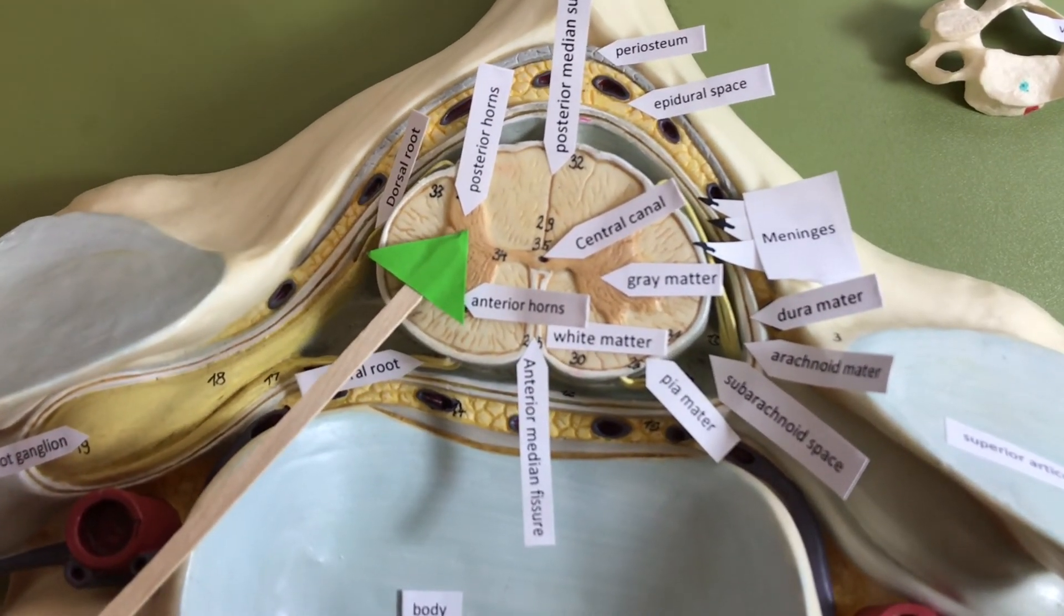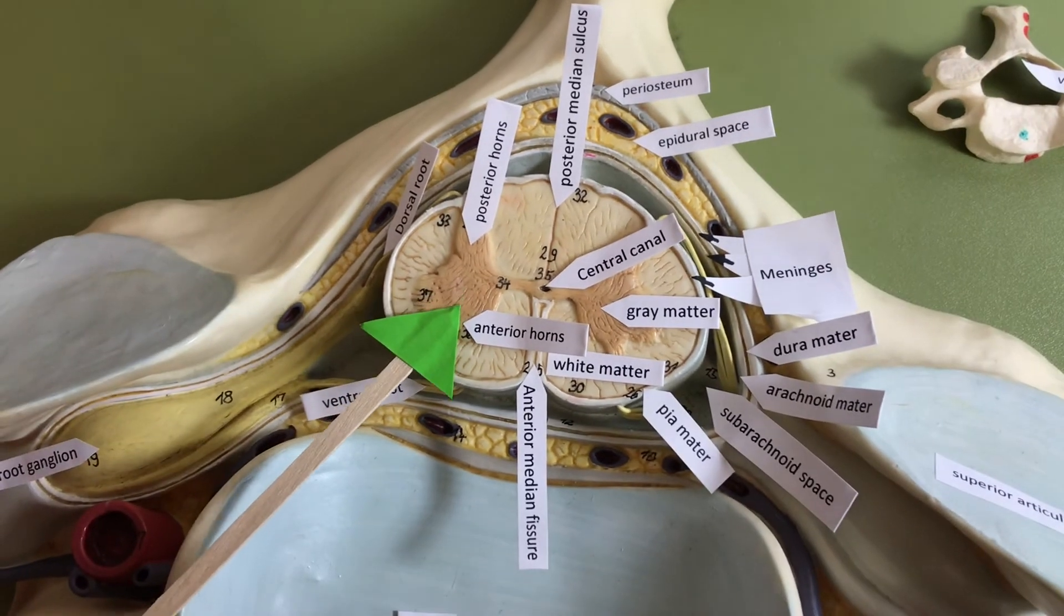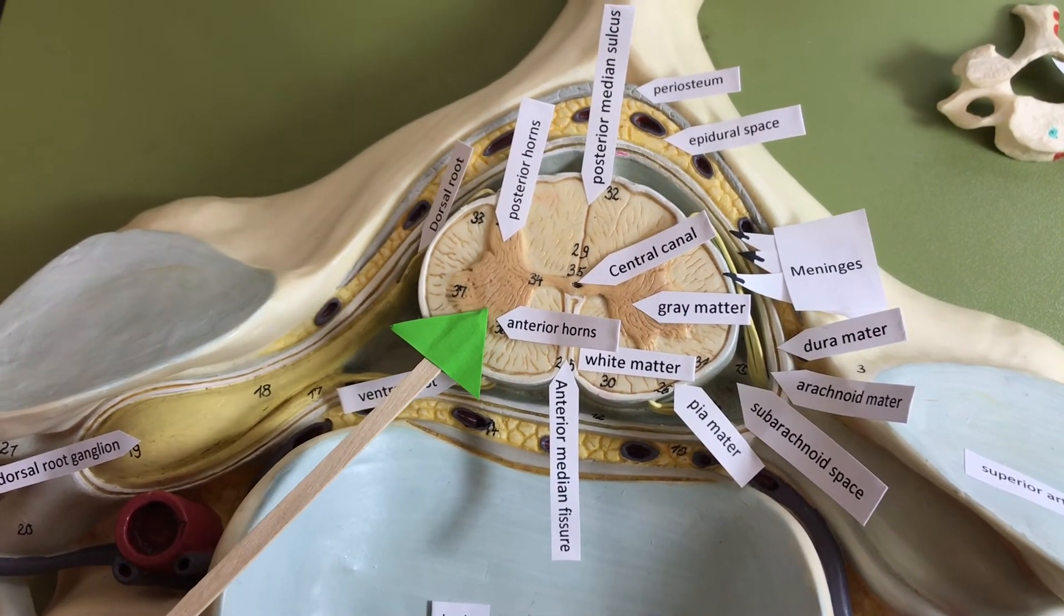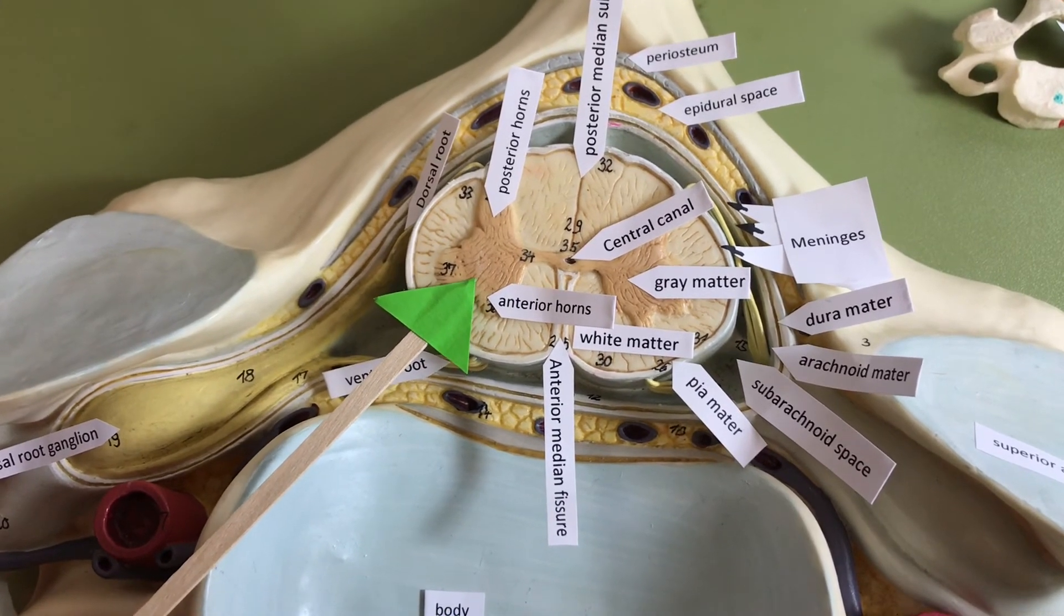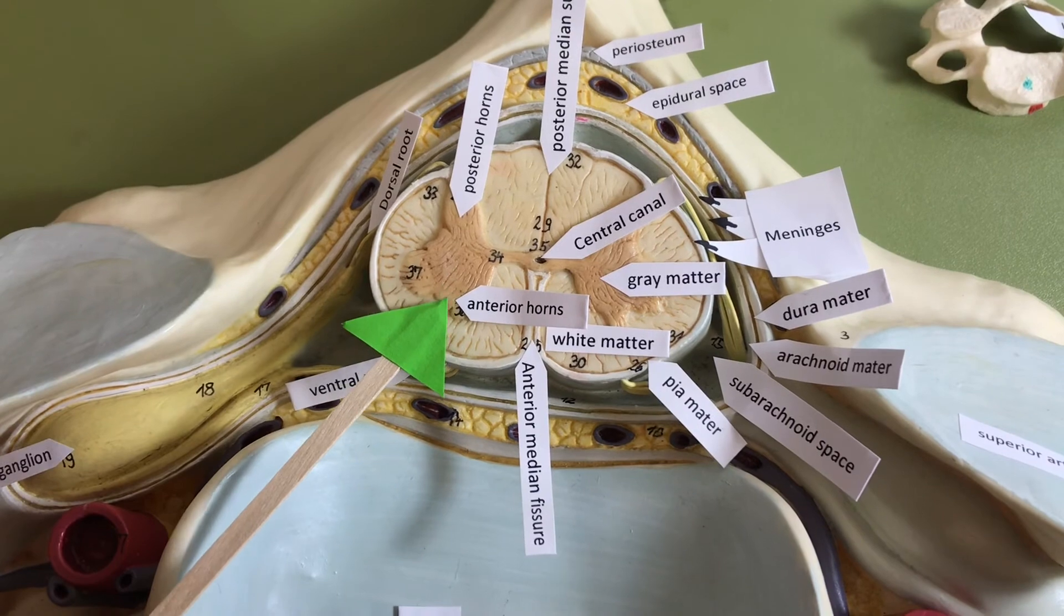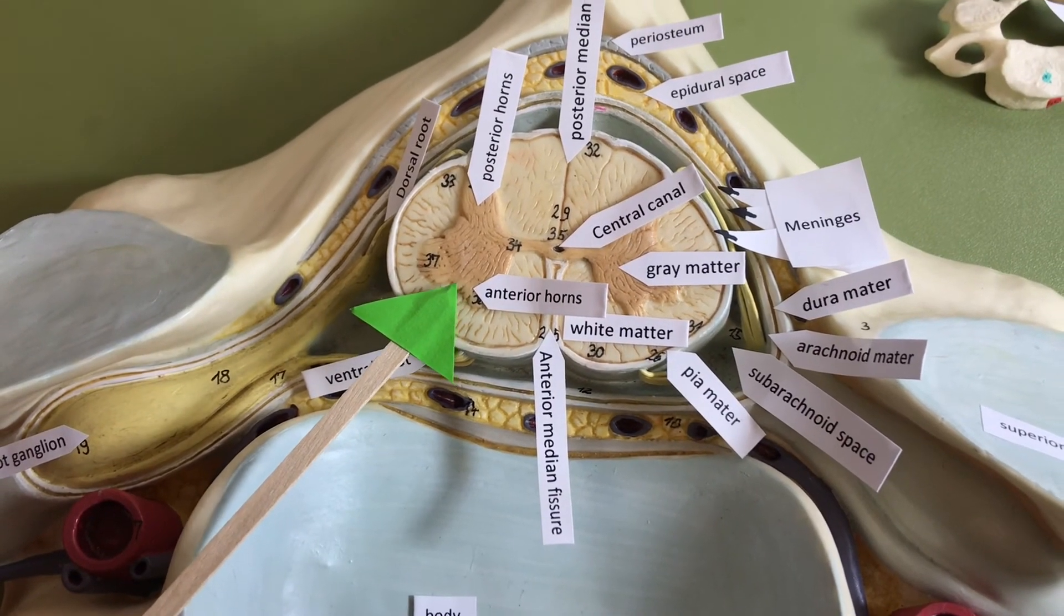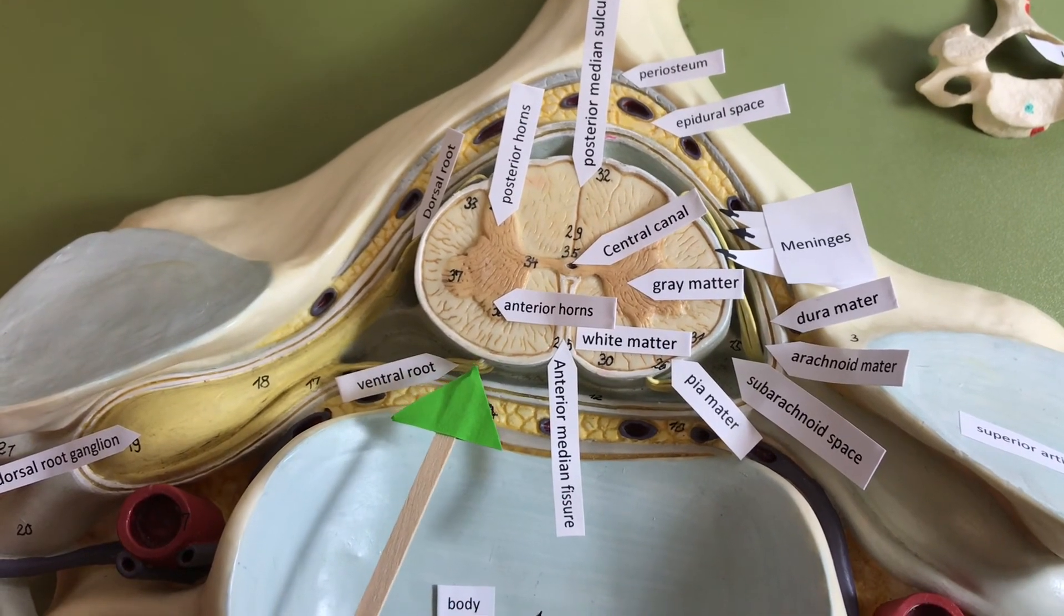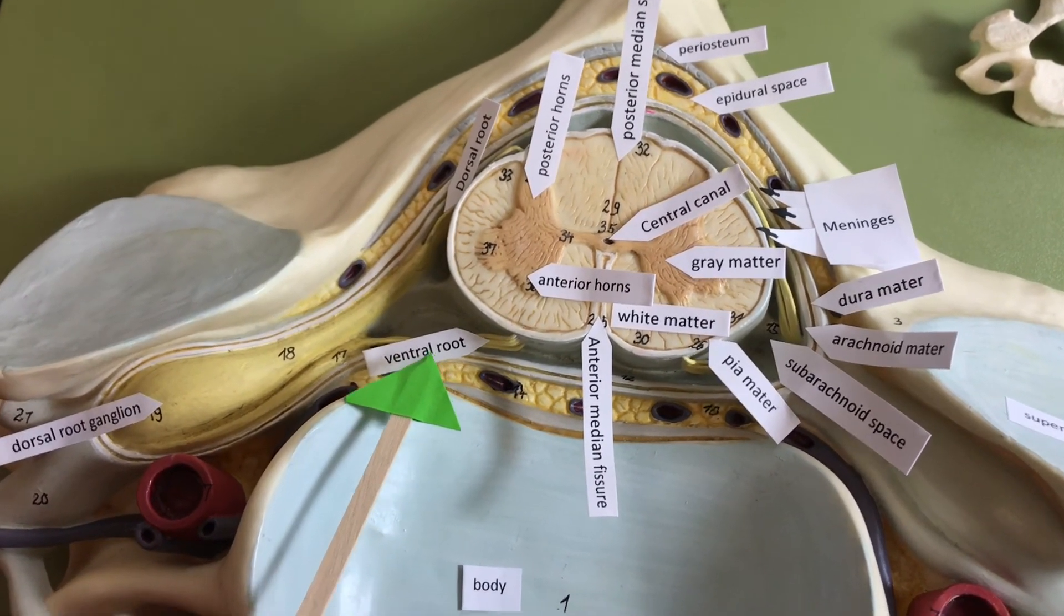The interneurons are going to synapse with the motor neuron. The anterior horn is going to house the cell bodies of the somatic motor neurons, which will innervate the skeletal muscles. The axon of the motor neuron is going to leave the spinal cord through the ventral root.